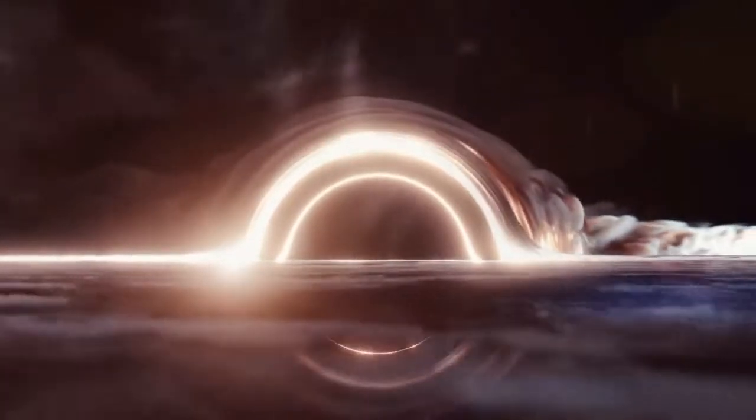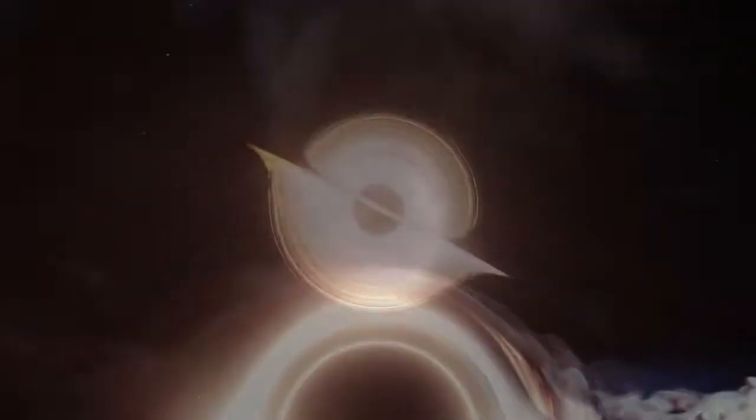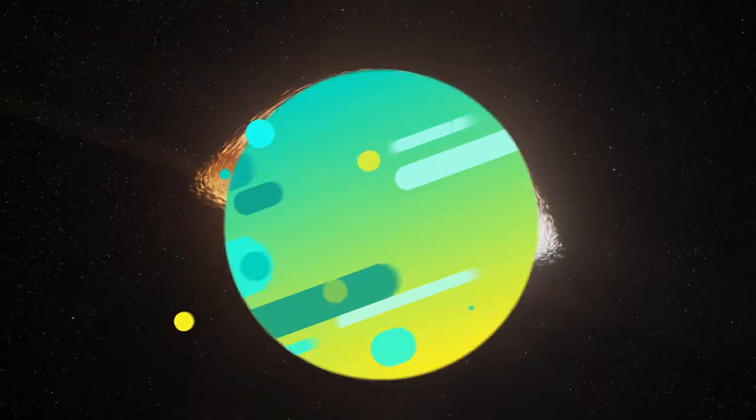A stellar black hole then consumes the dust and gas from their surrounding galaxies, which keeps them growing in size. Black holes of stellar mass have temperature on the order of billionth of Kelvin, which makes it impossible to observe.